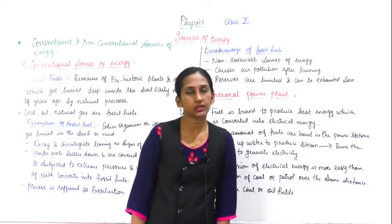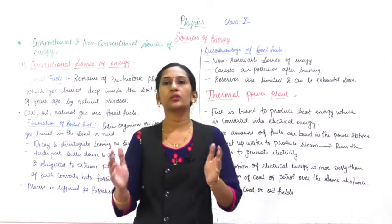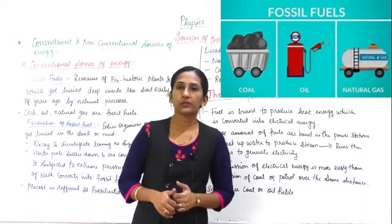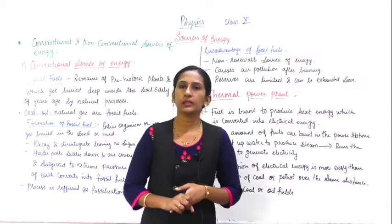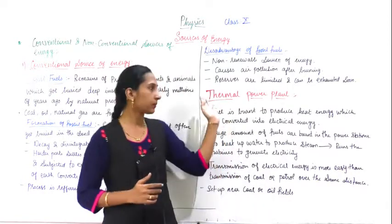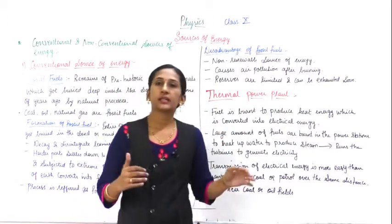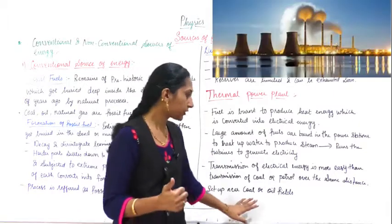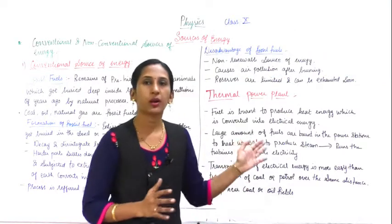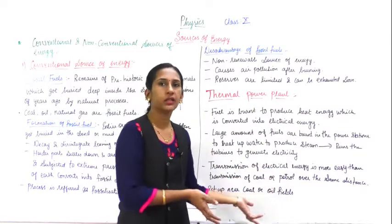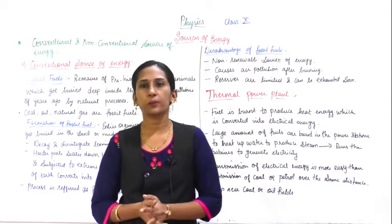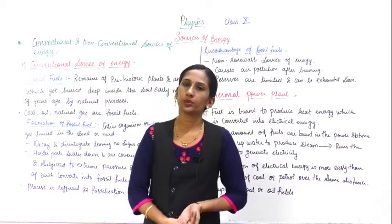The transmission of electrical energy is very easy — it can be transferred through wires. The transportation of coal, petroleum, and other fossil fuels is not as easy as transmitting electrical energy. Therefore, thermal power plants are set up near coal fields or oil fields so they can easily use the fossil fuels, produce electricity, and then easily transmit it through wires.